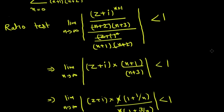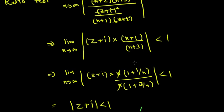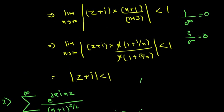Now we put the limit. We can't just put it in directly because it will be infinity over infinity, which is undefined. We take n out, it cancels, and we remain with this. Putting the limit: 1 over infinity is 0, and 3 over infinity is also 0. We got the region of convergence, which is |z+i| < 1.